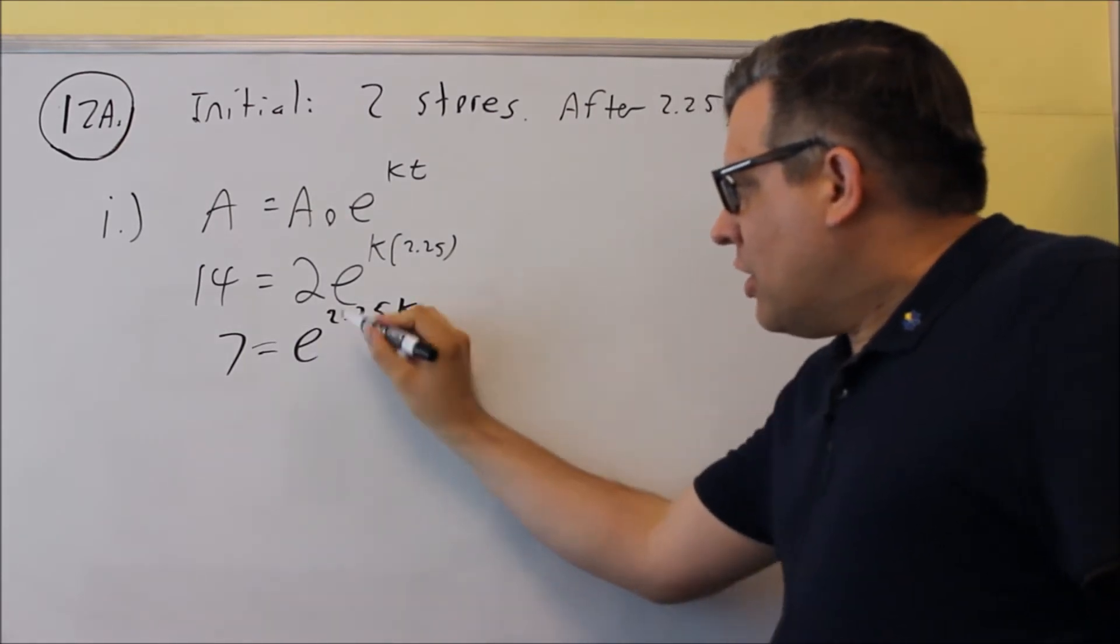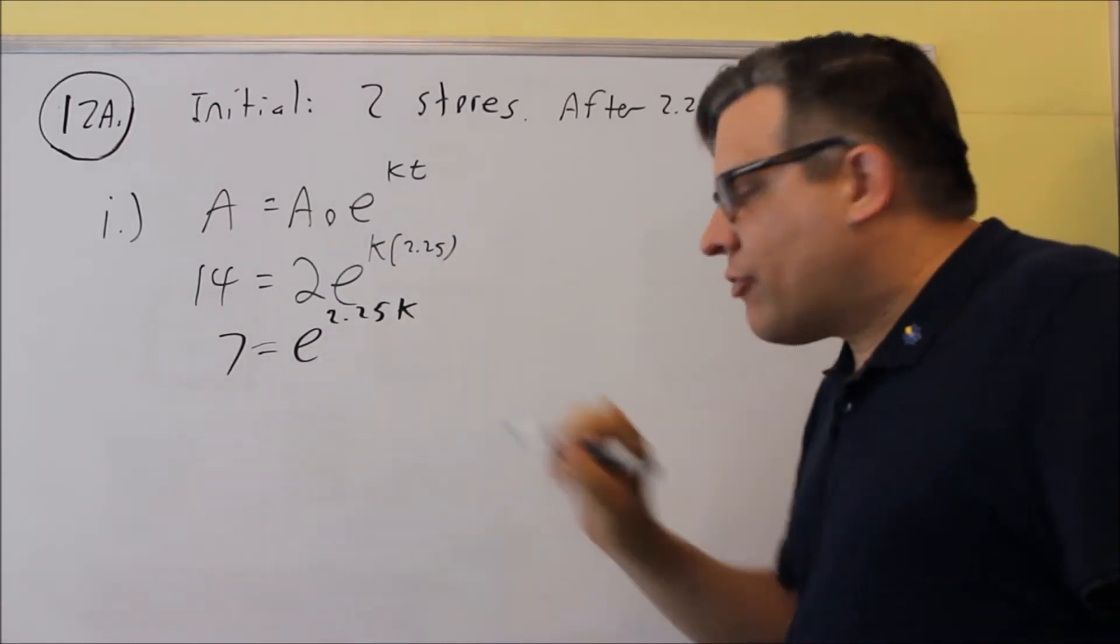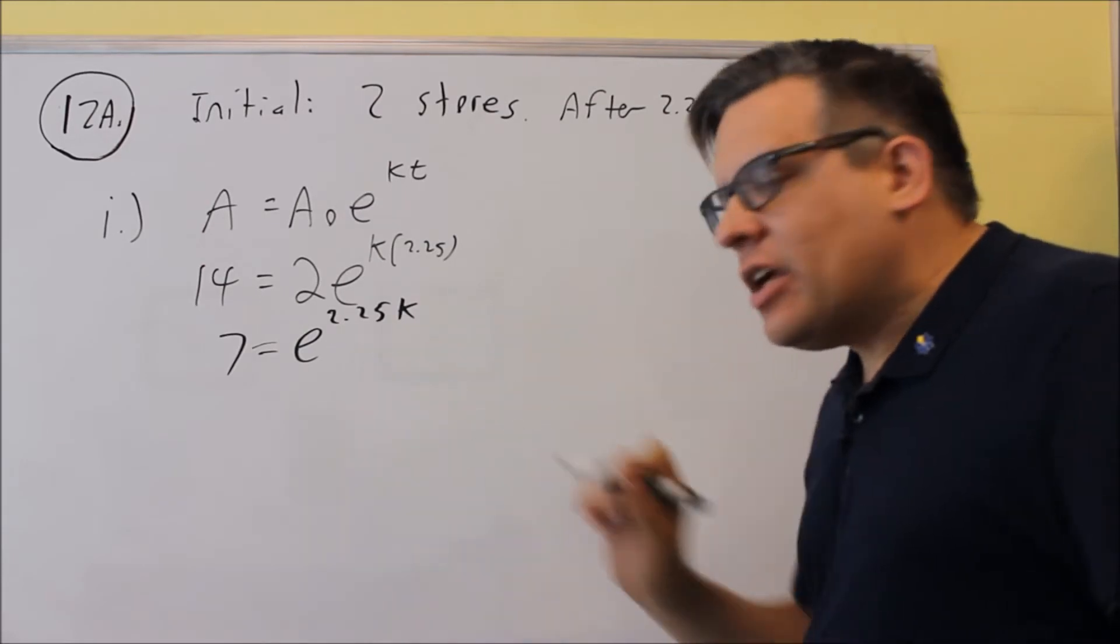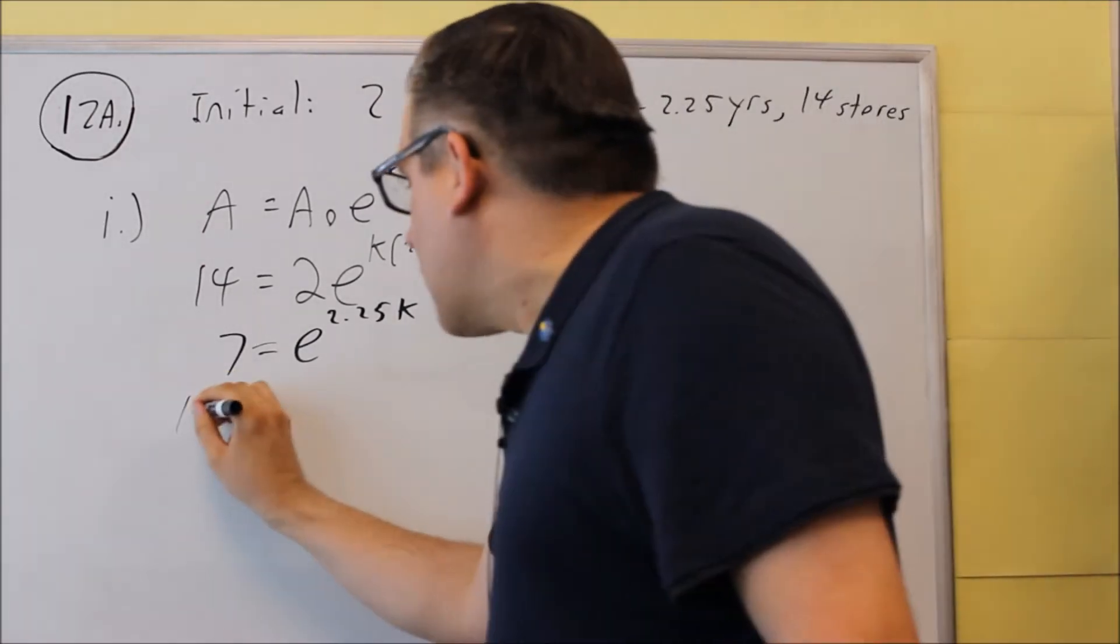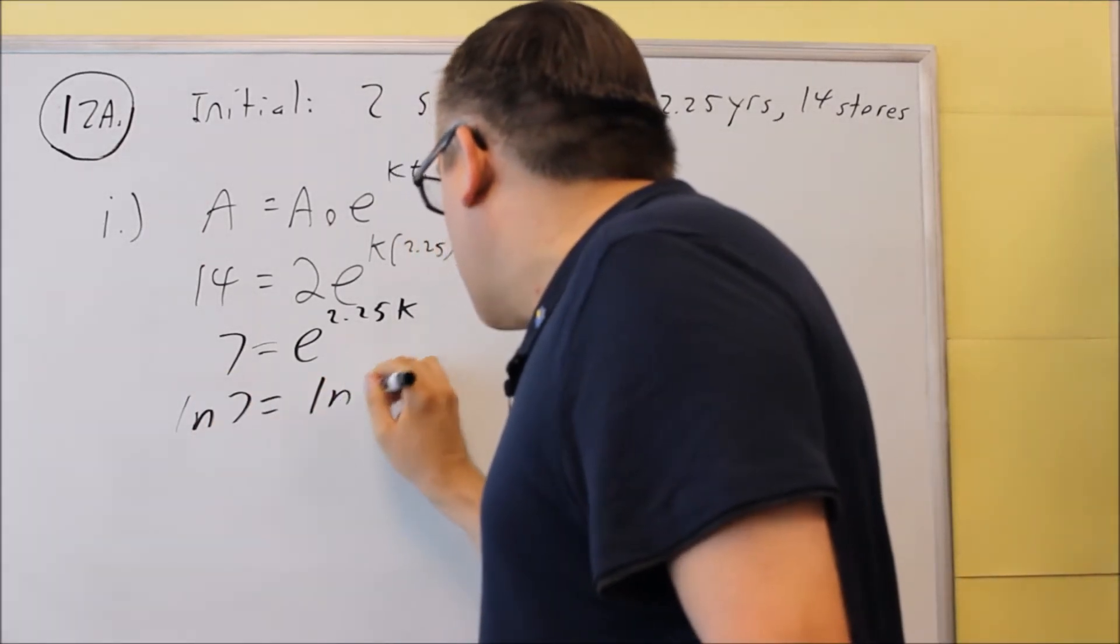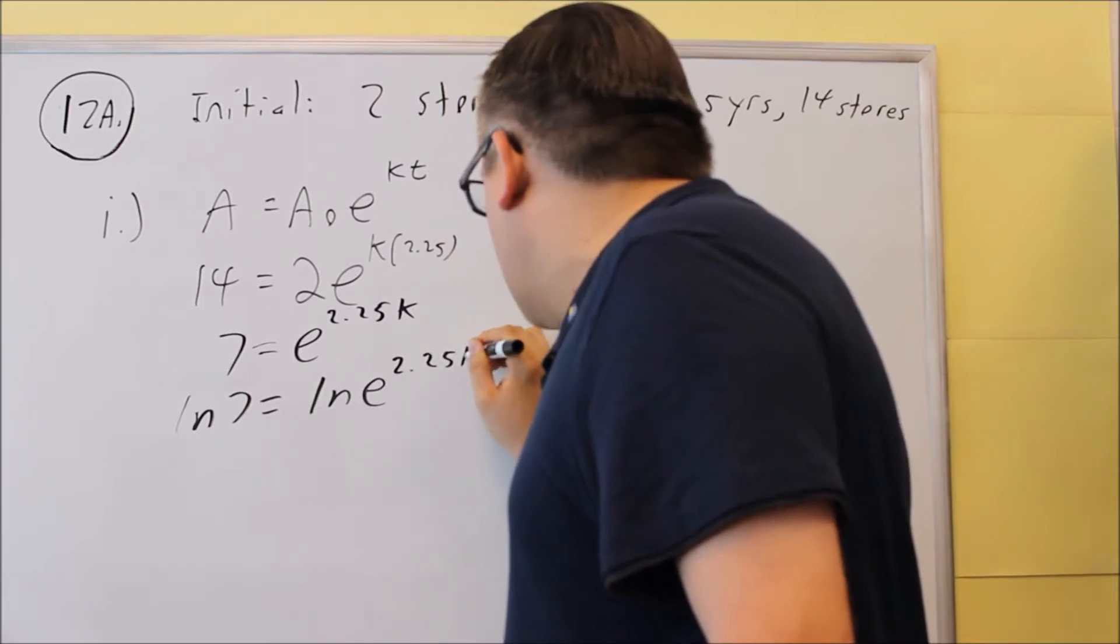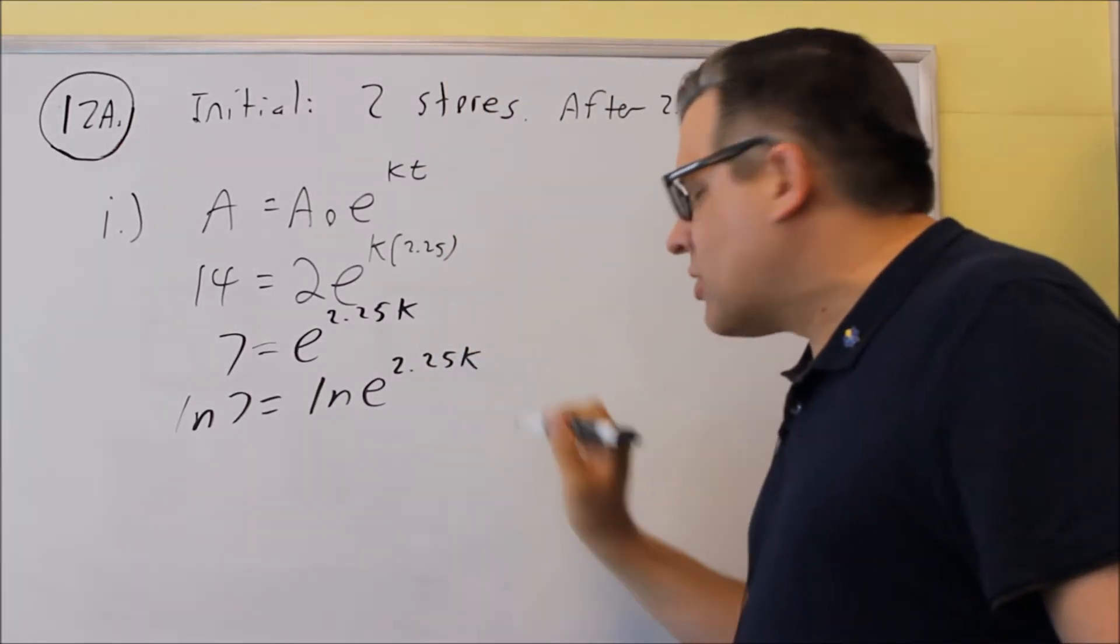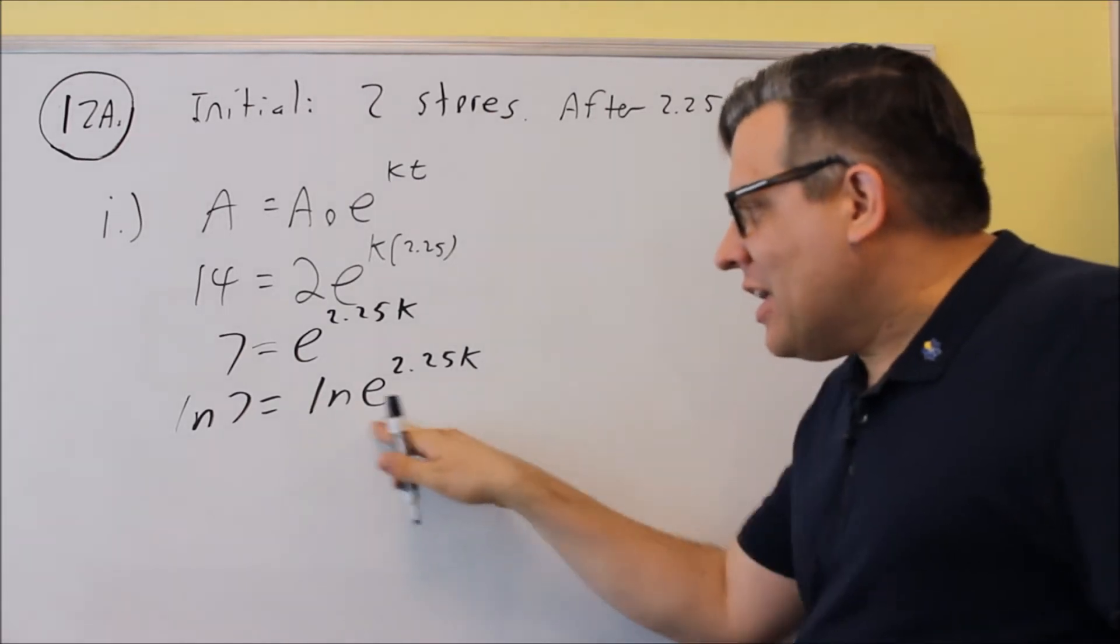And then we need to get the k out from the exponent. And because there's an e here, we're going to take the natural log of both sides because one of our properties we talked about was if you have natural log and an e,